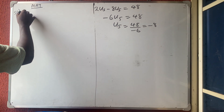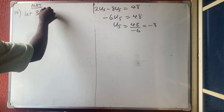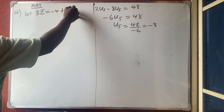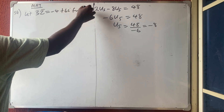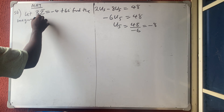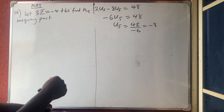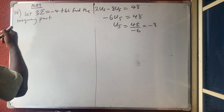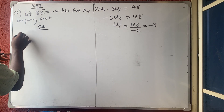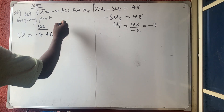Question 54: given that 3z̄ = minus 4 plus 6i, find the imaginary part. The solution is straightforward. We know that z = x plus yi, but z̄ (the conjugate) is x minus yi.